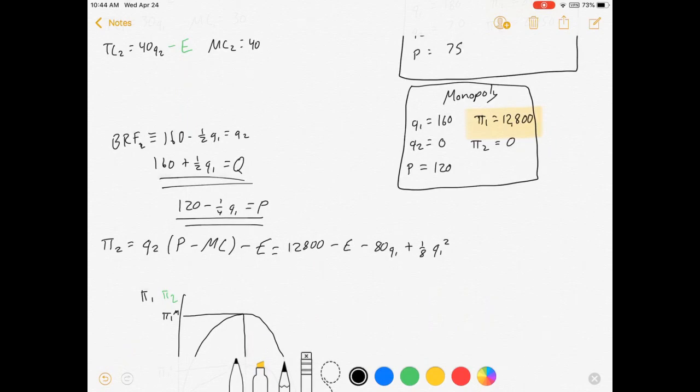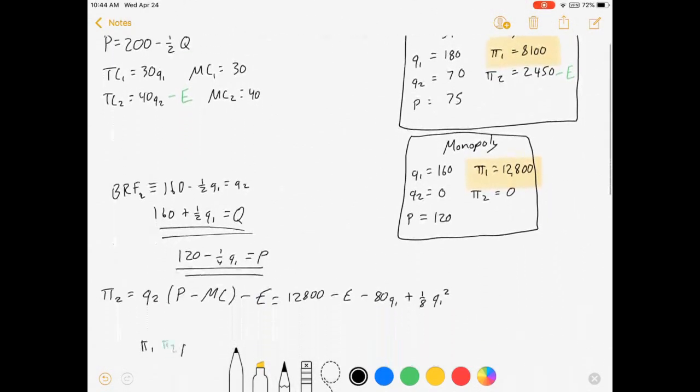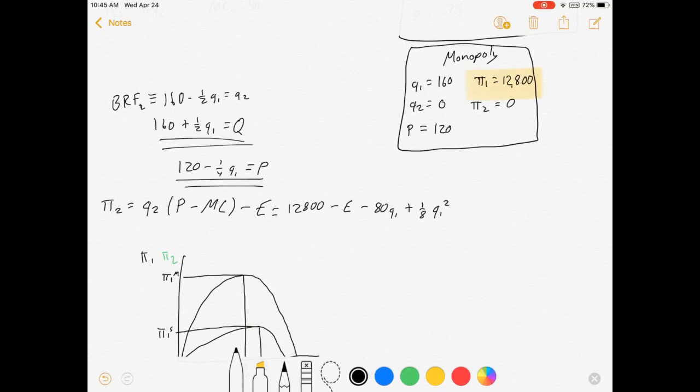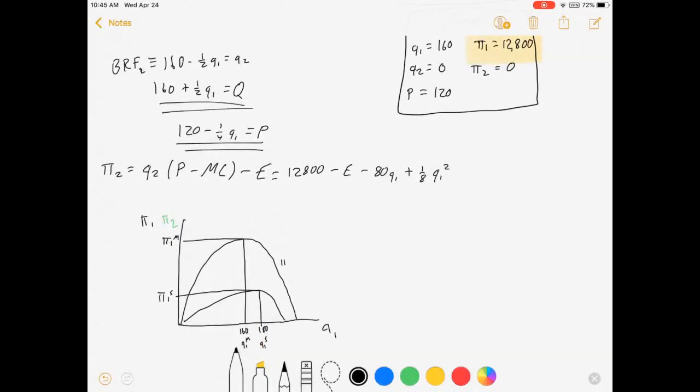We solved for Stackelberg in part 1. Monopoly I just threw in for part 2. In part 3, we solved for firm 2's profits as a function of firm 1's quantity. We did this because we outlined that there's potential for firm 1 to not actually maximize profits on either of these monopolist curve or this Stackelberg curve. So what we're going to focus on in this video is this entry cost.